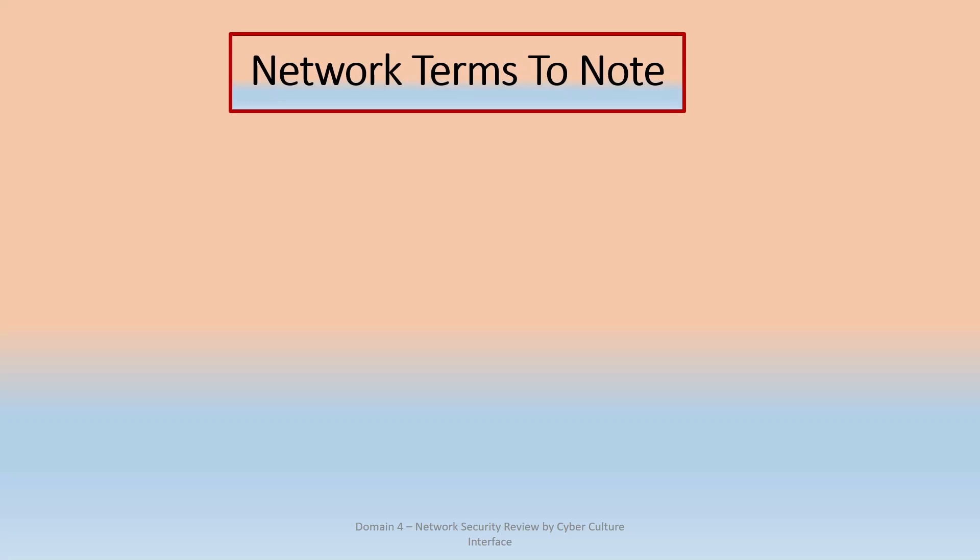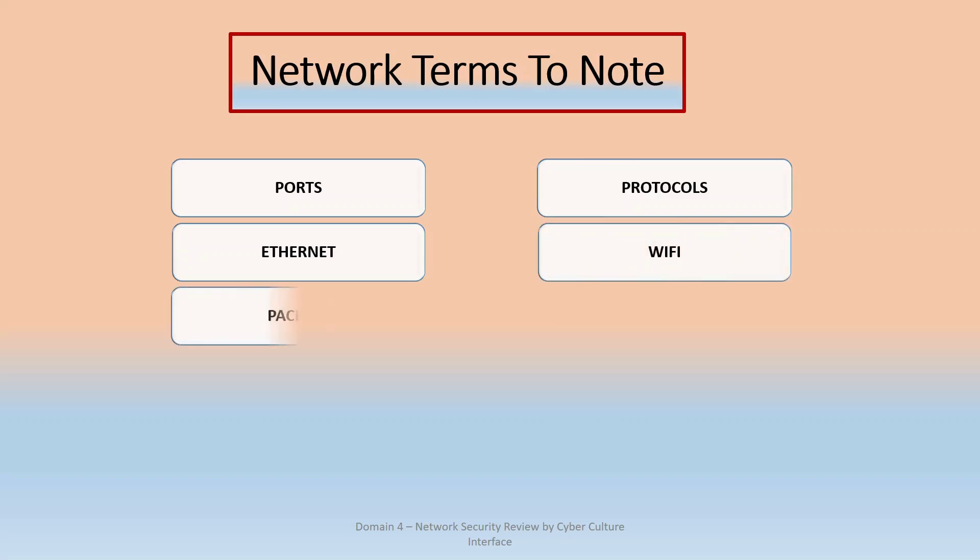In ISC2 Certified in Cybersecurity Domain 4, there are some network terms that you need to take note of. Terms like protocols, ports, Ethernet, Wi-Fi, packets, IP address, MAC address. You regularly come in contact with these terms and you need to understand them. You need to look at their definitions and know how to apply them.